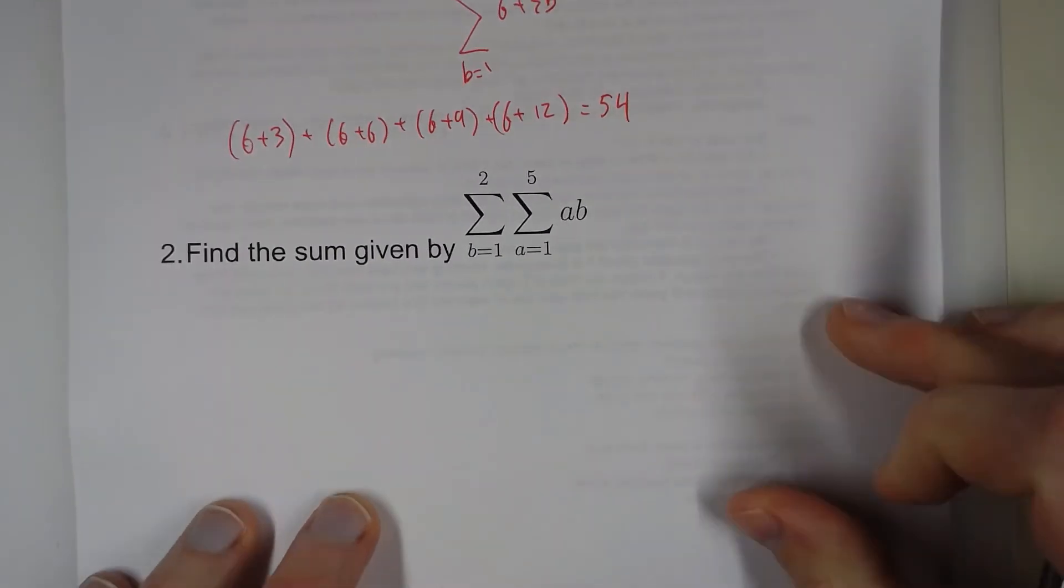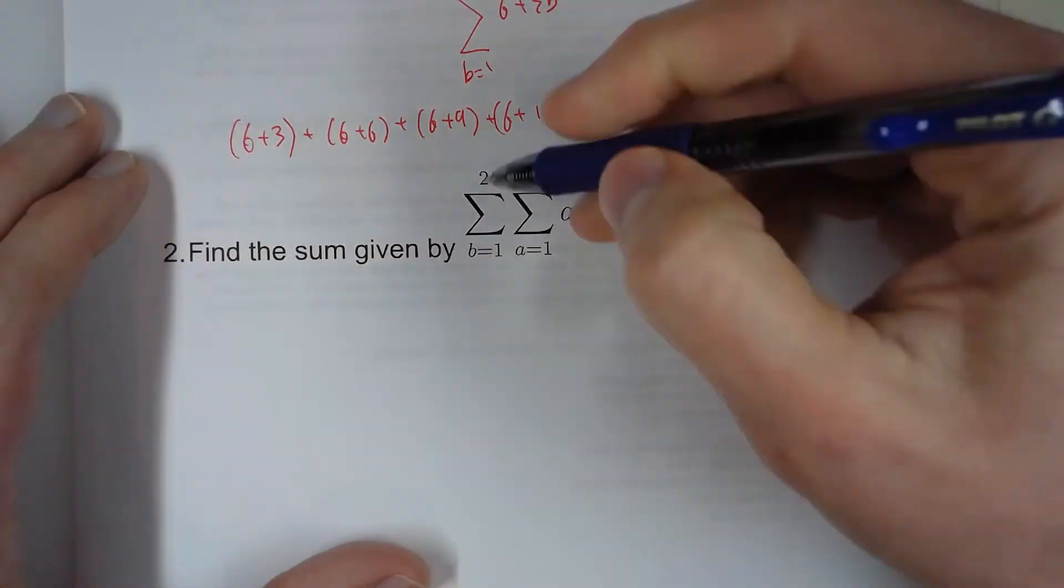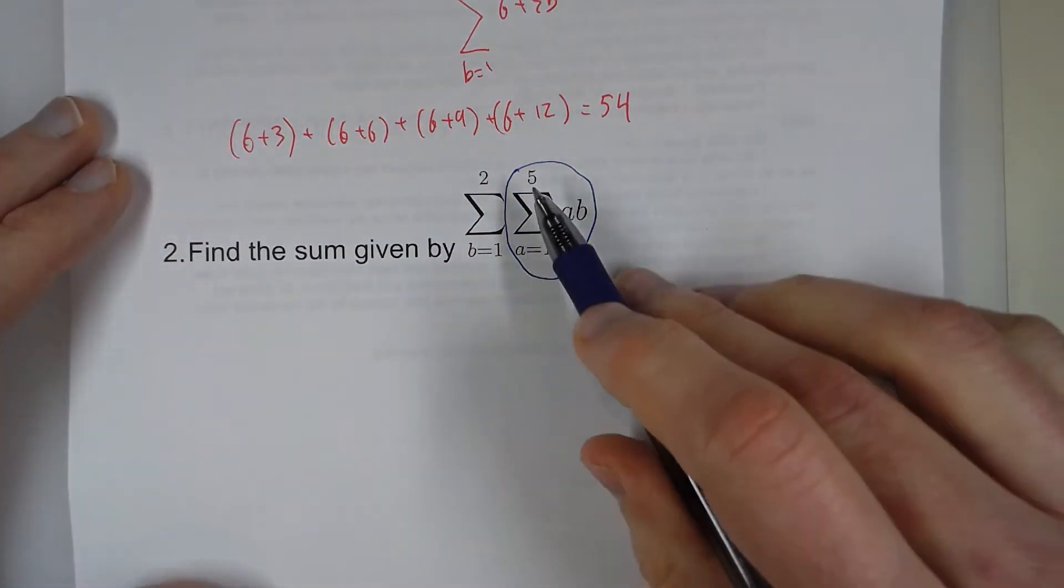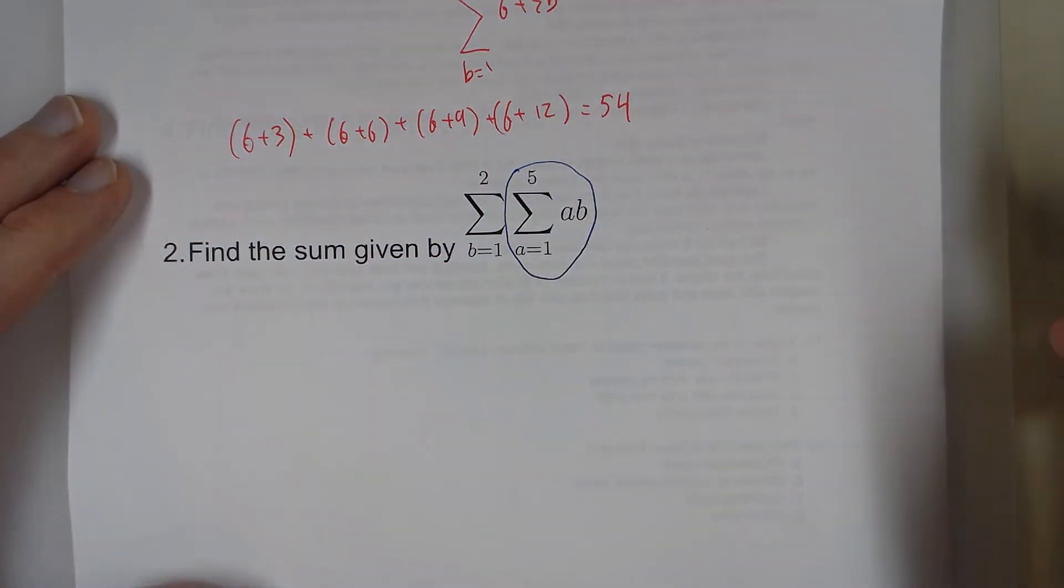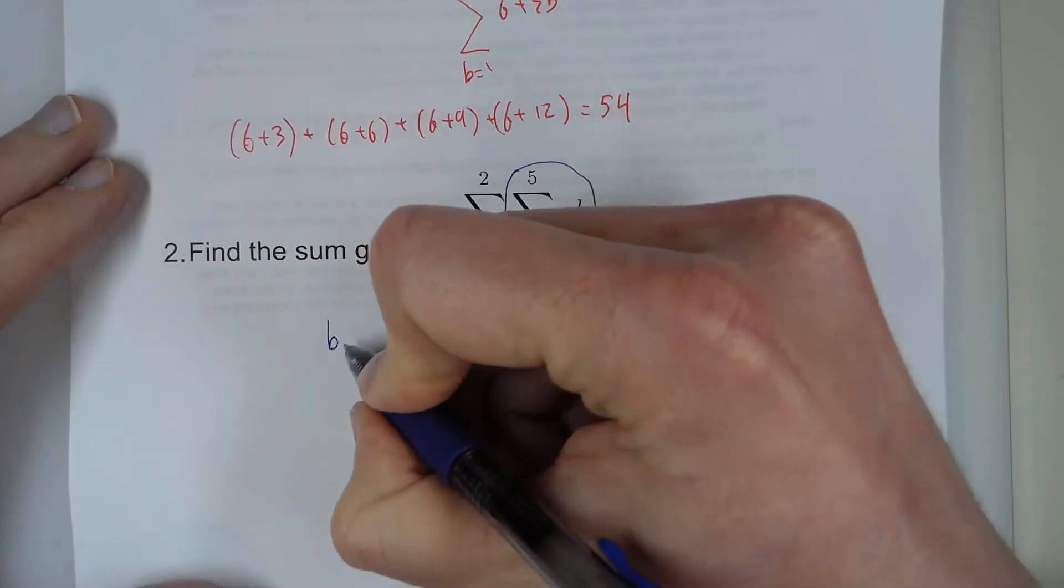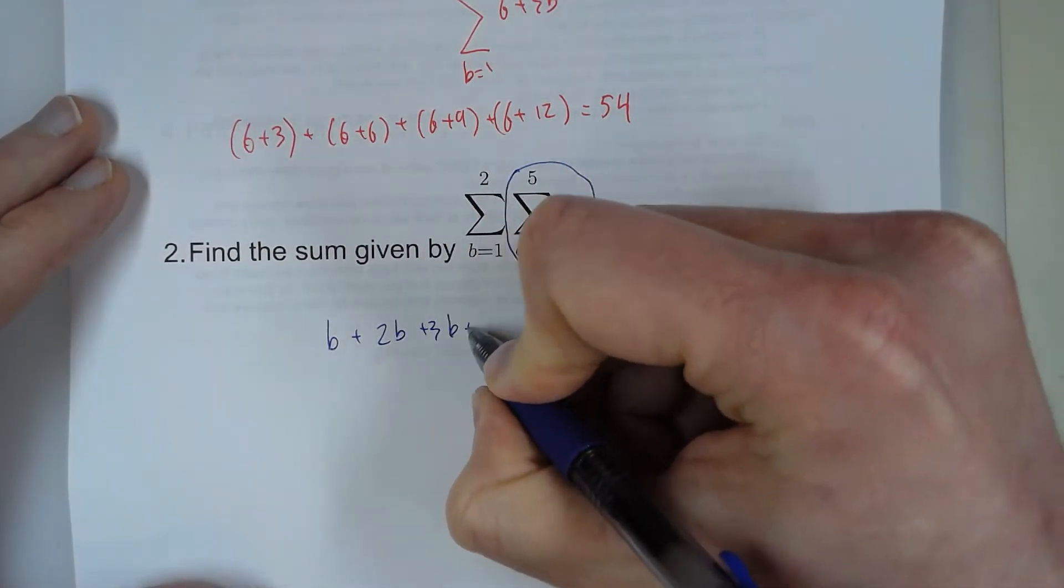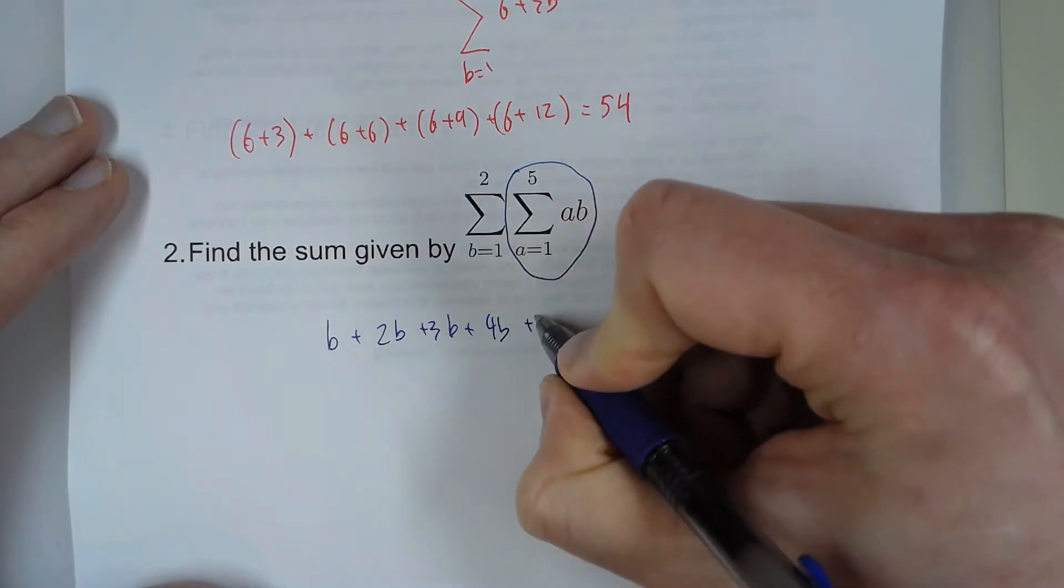For the second one, here we're going to do the same thing. We're going to focus on this one. We're going to plug 1, 2, 3, 4, and 5 in for a. So that's going to be b plus 2b plus 3b plus 4b plus 5b.